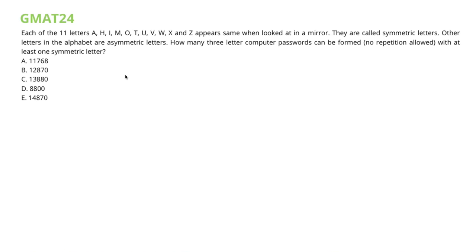In this problem, we are dealing with the English language which contains a total of 26 letters. According to the problem, 11 of these letters are symmetric. Therefore, the remaining 15 letters are asymmetric.